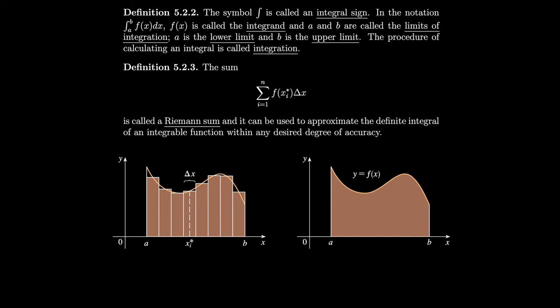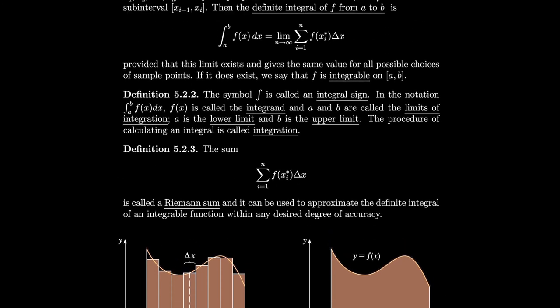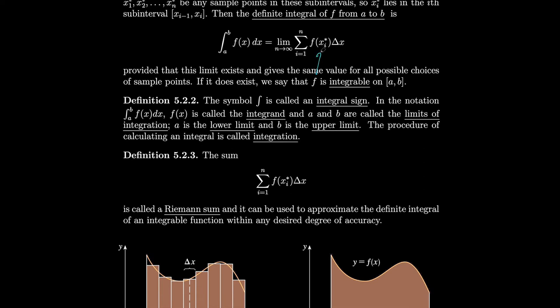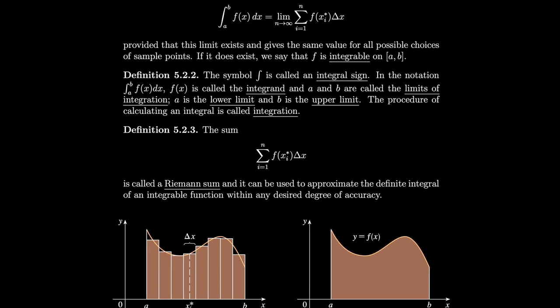Because when we take the limit, the number of rectangles is so many that any difference between the actual area under the curve and the approximation becomes completely negligible — we're looking at the number of rectangles going towards infinity. We define our integral using sample points instead of left or right endpoints because no matter where we choose the sample points, it doesn't matter. We take our limit, the choice of sample points becomes irrelevant. So if we are doing our integral, we can just make a choice of sample point and it shouldn't make any difference.